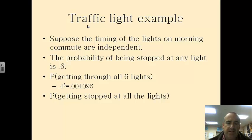Probability I get stopped at all the lights. Well, we know the probability of getting stopped is 60%, so that's going to be 0.6 to the sixth. I get stopped at all of them. So I'm more likely to get stopped at all of them than I am to get through all of them.